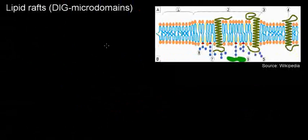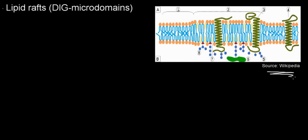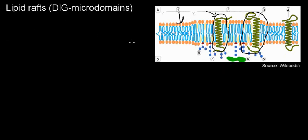We've discussed two methods of measuring lateral diffusion of membrane proteins. Now let's talk about lipid rafts, also known as detergent-insoluble glycolipid microdomains (DIGs). These are glycolipids — lipids embedded in the lipid bilayer — visible as small distinct domains within the membrane. Their full functionality is still under research.